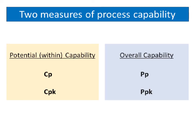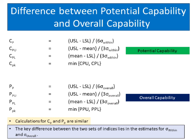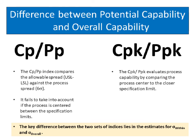There are two measures of process capability: potential capability, represented by Cp and Cpk, and overall capability, represented by Pp and Ppk. Potential capability only accounts for the variation within the subgroups, while overall capability accounts for the overall variation of all measurements taken. The key difference between the two sets of indices lies in the estimates for within standard deviation and overall standard deviation. The Cp/Pp index compares the allowable spread (USL minus LSL) against the process spread (six sigma), but fails to take into account if the process is centered between the specification limits. The Cpk/Ppk evaluates process capability by comparing the process center to the closer specification limit.